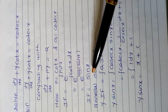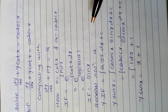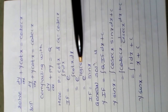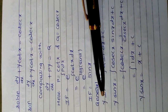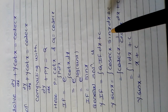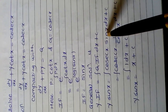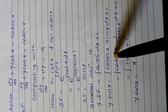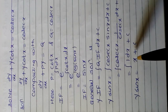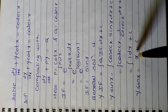We find the general solution using y times IF equals the integral of Q times IF with respect to x, plus c. Putting IF equals sin(x) and Q equals cosec(x), we get y times sin(x) equals the integral of cosec(x) times sin(x) dx plus c. Since sin(x) equals 1/cosec(x), cosec(x) and sin(x) cancel to give 1. The integral of 1 with respect to x is x, so the final answer is y·sin(x) equals x plus c.